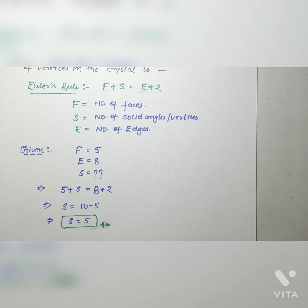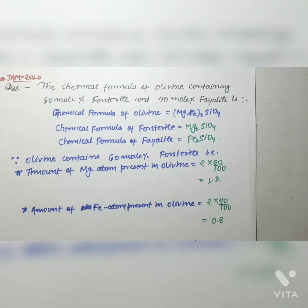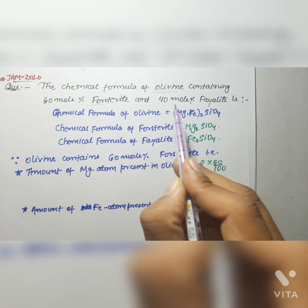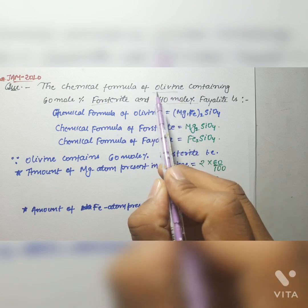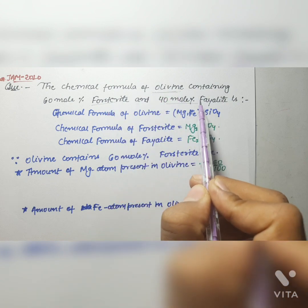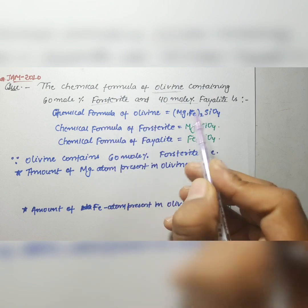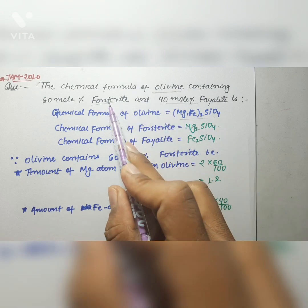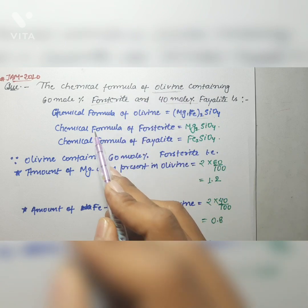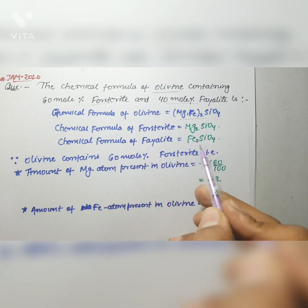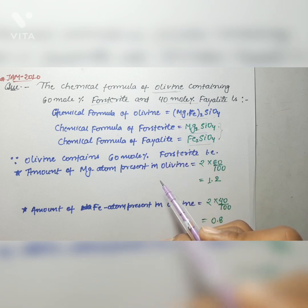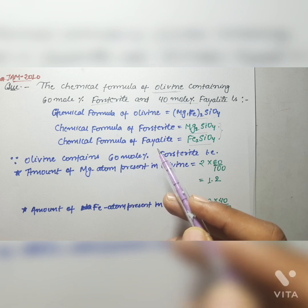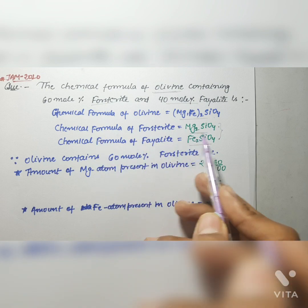The correct answer is 5. The next question is taken from JAM 2010 and asks for the chemical formula of olivine containing 60 mole percent forsterite and 40 mole percent fayalite. Olivine is a series between forsterite and fayalite as end members. The general formula of olivine is (Mg, Fe)2 SiO4. The chemical formula for forsterite is Mg2 SiO4 and for fayalite is Fe2 SiO4. These formulas should be remembered to solve such questions.